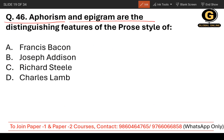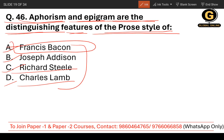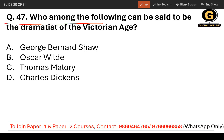Question number 46: Aphorisms and epigrams are the distinguishing features of the prose style of whom? The options are Francis Bacon, Joseph Addison, Richard Steele, and Charles Lamb. The correct option is Francis Bacon.